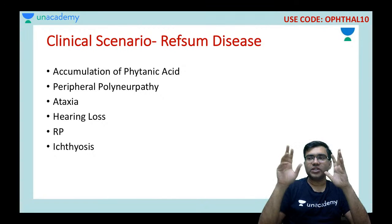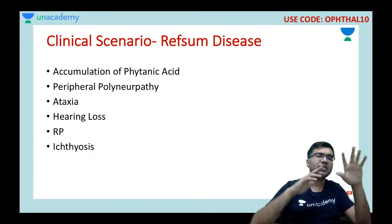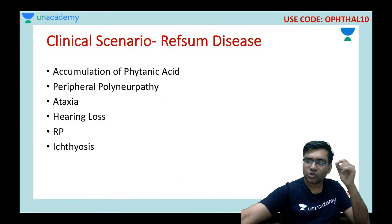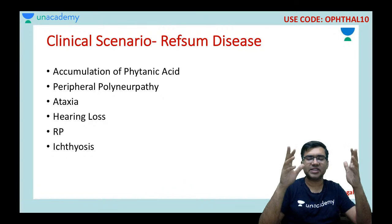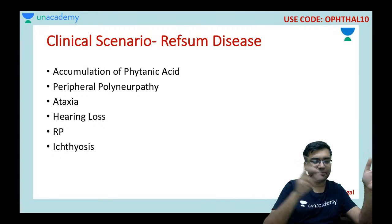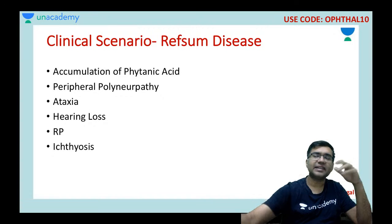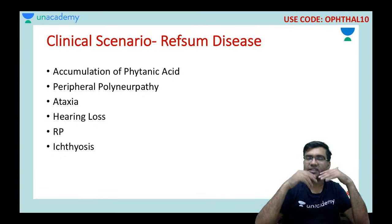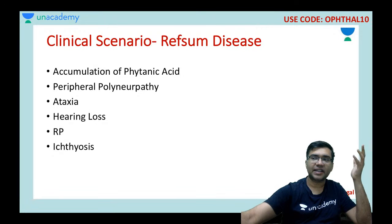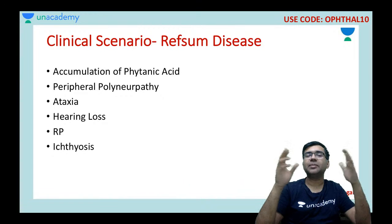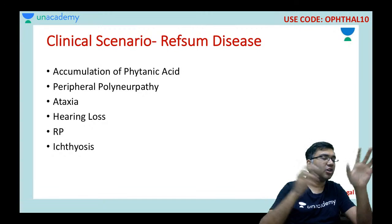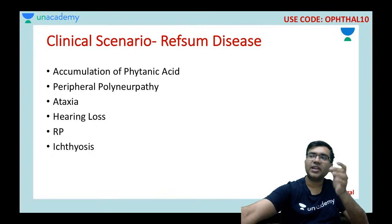To summarize the clinical scenarios: an infant with fatty-smelling stools may have abetalipoproteinemia with RP; an adult with ptosis, heart block, and ophthalmoplegia suggests Kearns-Sayre syndrome; an adult with peripheral polyneuropathy, ataxia, hearing loss, and skin problems may have Refsum disease with RP.